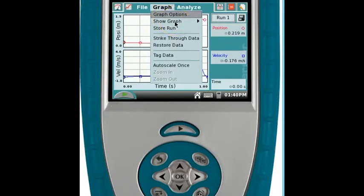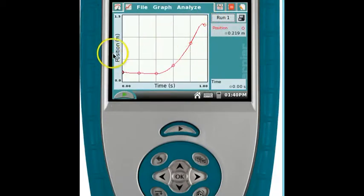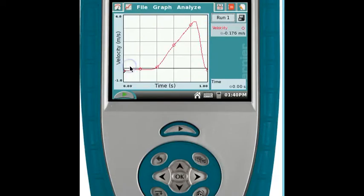If I click on graph, show graph, I can select one graph. It's not the right one. I want velocity time. So I can click where it says position, click on velocity, and that's the graph I actually want to see, the velocity time graph.